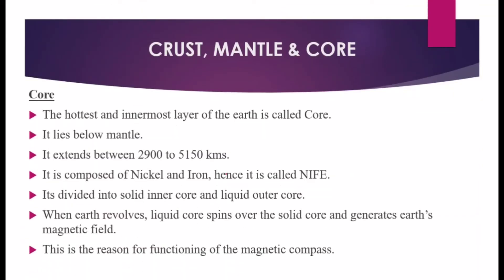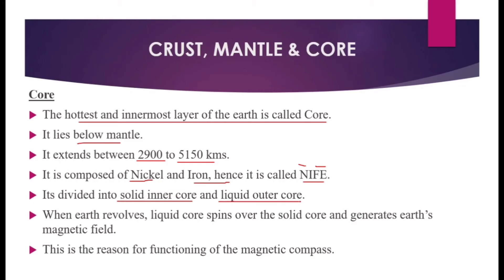The hottest and innermost layer of the Earth is called the core, which lies below the mantle. It extends between 2,900 to 5,150 kilometers depth. It is composed of nickel and iron — hence called NIFE (Ni for nickel, Fe for iron). It is divided into a solid inner core and a liquid outer core. The liquid outer core spins over the solid inner core as the Earth rotates, generating Earth's magnetic field. Due to high pressure, the material in the inner core remains solid.